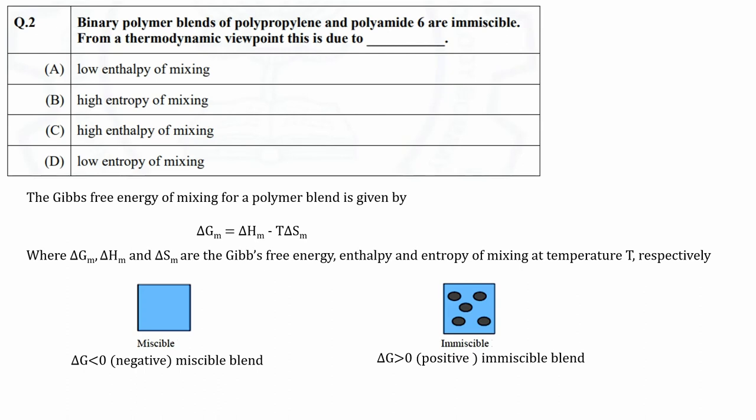Now let's see from the given options which condition will lead to positive ΔG. The first option is low enthalpy of mixing. Enthalpy of mixing will be high or low depending on interaction between the polymers. Since polypropylene and polyamide have different polarities and crystalline morphologies, they do not mix together. Since there is no interaction between the two, or no bond formation or dissociation, enthalpy does not change.